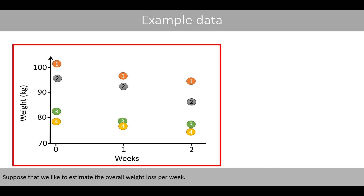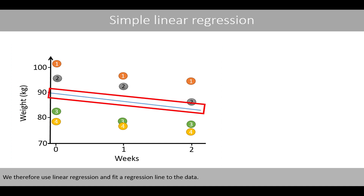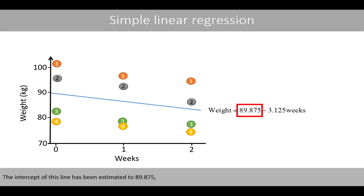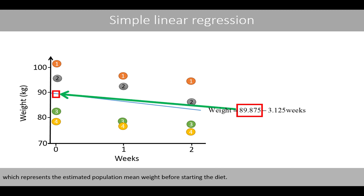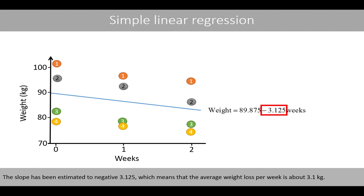Suppose that we like to estimate the overall weight loss per week. We therefore use linear regression and fit a regression line to the data. The intercept of this line has been estimated to 89.875, which represents the estimated population mean weight before starting the diet. The slope has been estimated to negative 3.125, which means that the average weight loss per week is about 3.1 kilos.